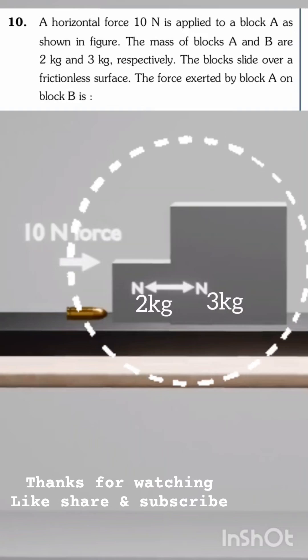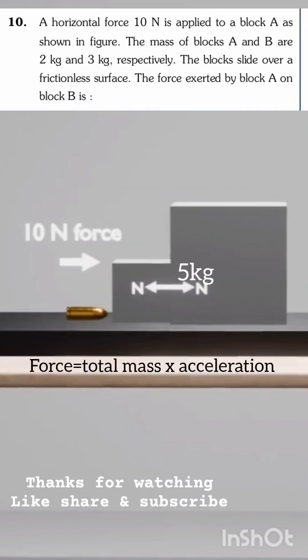If we consider these two blocks as a system, then the total mass of the system would be 5kg and the force on the system is 10N. So we can calculate the acceleration on the system: force equals total mass times acceleration, 10 equals 5 times a. The acceleration on the system is 2 meters per second squared.